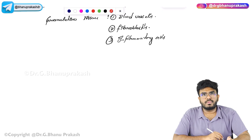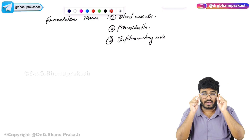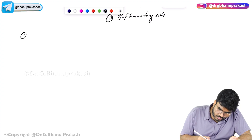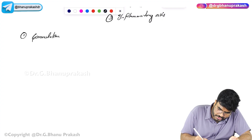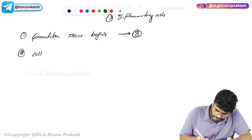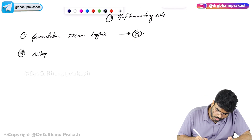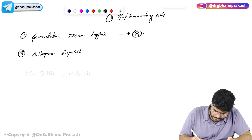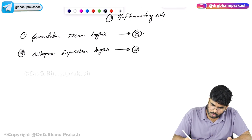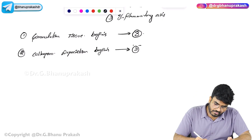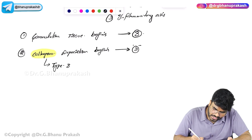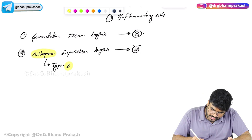When does granulation tissue begin? Granulation tissue begins by the third day. Collagen deposition also begins by the third day — fibroblasts deposit collagen to fill the gap. The type of collagen deposited in granulation tissue is type 3 collagen. Very important MCQ: in granulation tissue, the collagen present is type 3 collagen.